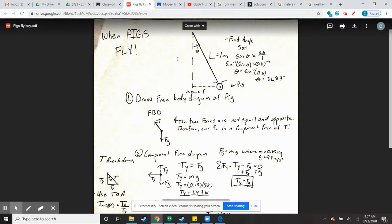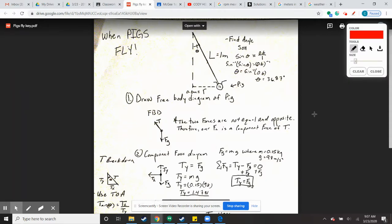Our triangle is going to help us figure out the angle. So if we know that the length of the string was about one meter, and when we measured the radius of the circle the pig was making, that radius is 0.6.